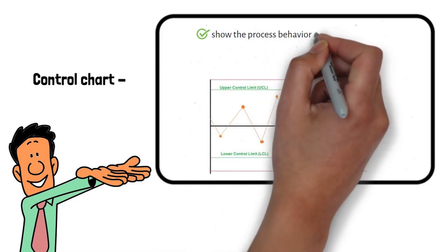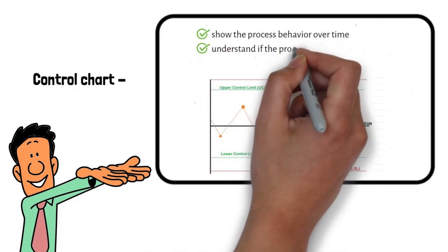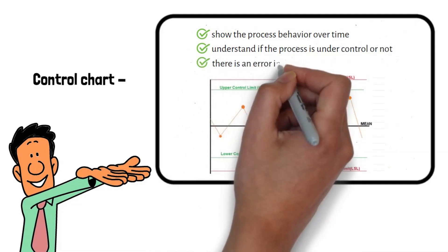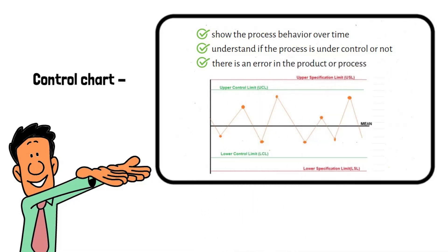A control chart helps you to understand if the process is under control or not. If the results are beyond the control limits, you can say that there is an error in the product or process.